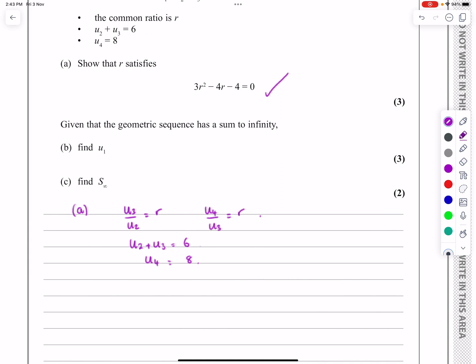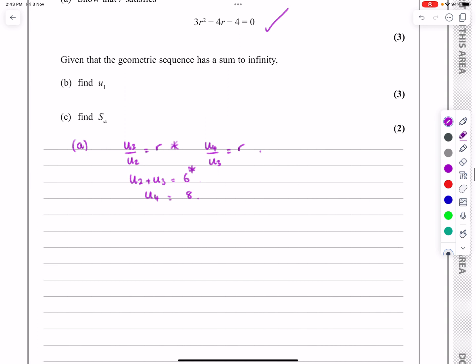Okay, first of all then, if we combine this one and this one, we can say that U3 over U2 is equal to R. That will then give me, if I rearrange that, U2 is equal to U3 over R.